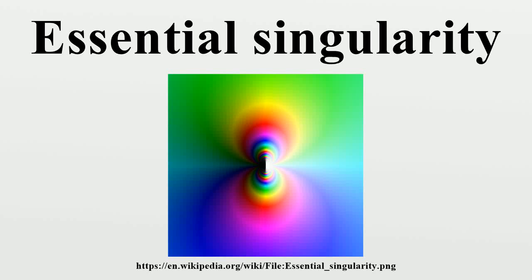In complex analysis, an essential singularity of a function is a severe singularity near which the function exhibits odd behavior. The category essential singularity is a leftover or default group of singularities that are especially unmanageable. By definition, they fit into neither of the other two categories of singularity that may be dealt with in some manner.